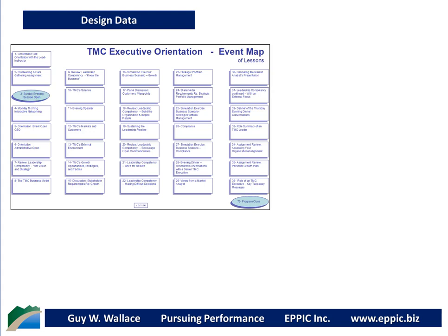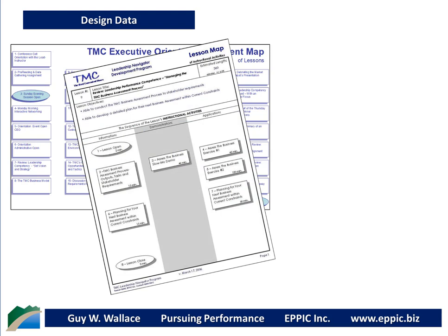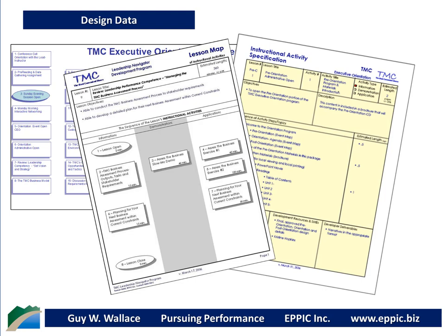Once we go to the design phase, the design data is captured and reported back in an event map of lessons, where we have simply taken all of the analysis data and sorted and organized it. An event map of lessons is similar to a map of the United States with a map of the states, just as a state map is generally a map of the counties. At the lesson level is our lesson map — our focus for this presentation. There are three types of instructional activities: information, demonstration, and application. For each instructional activity we include a specification. So there are three levels of design data in the MCD process: event maps of lessons, lesson maps of instructional activities, and the instructional activity specification, which contains the sequence of activities and content flow, estimated lengths, key subject matter experts, and resources for development.